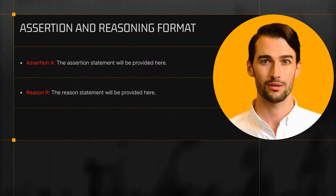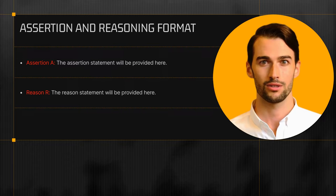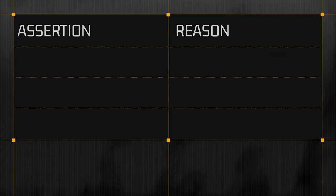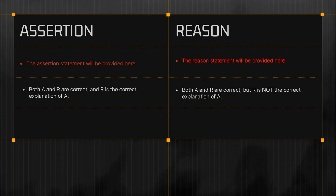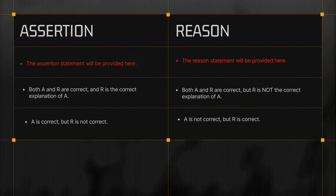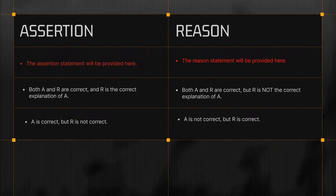Let's take a closer look at this format. Here's how these questions are structured. In the light of the above statements, you will have four options to choose from. Option 1: Both A and R are correct, and R is the correct explanation of A. Option 2: Both A and R are correct, but R is not the correct explanation of A.